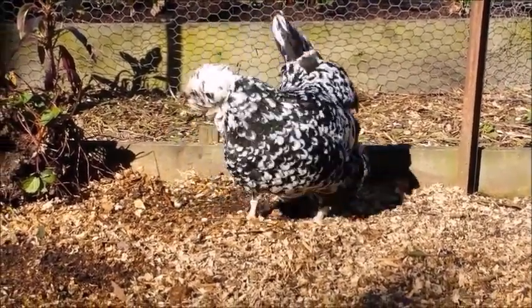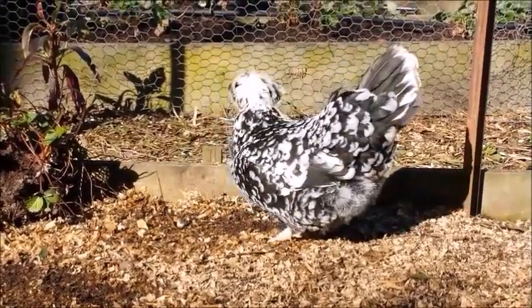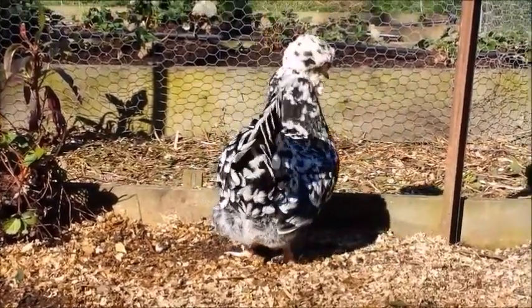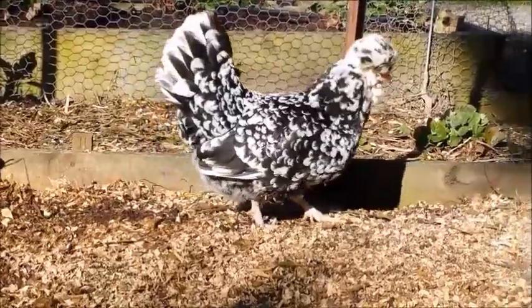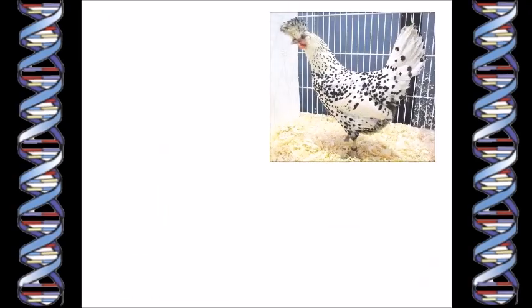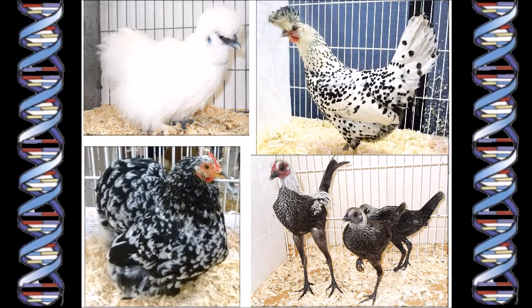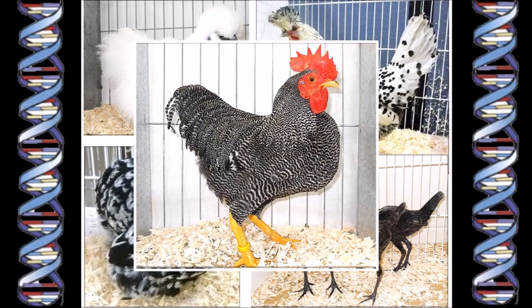If you go to a poultry show you won't see many plain brown hens like the hybrids that are used to produce almost all of the eggs you buy in the supermarket. And you won't even see many show birds that look much like their original ancestors, although the Welsummers and Brown Leghorns do resemble them a little. Rather, what you will see is a huge range of chickens in different shapes, colors, and patterns of color.